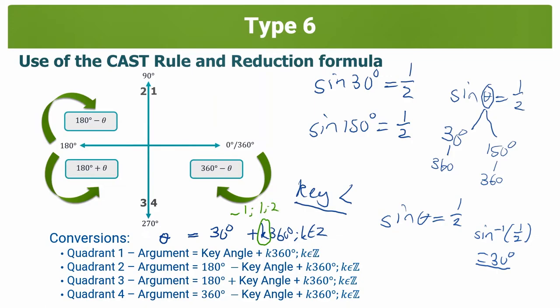Why do we say k360? Because the trig function repeats itself every 360 degrees. k is standing for an integer — it could be minus 1, 1, 2, and so on. If you multiply 2 by 360 you get 720, so 720 plus 30 is 750, and sine of 750 still gives you a half. This k360 allows us to express a general solution — it's basically a machine we can use to find all values of theta that would make sine theta equal to a half. All other quadrants also have conversions, which we'll go through with an example.